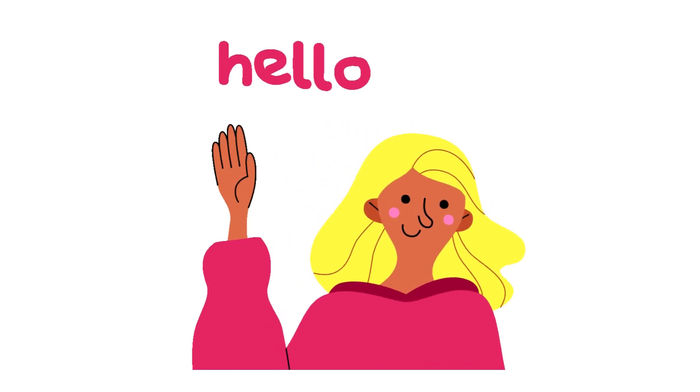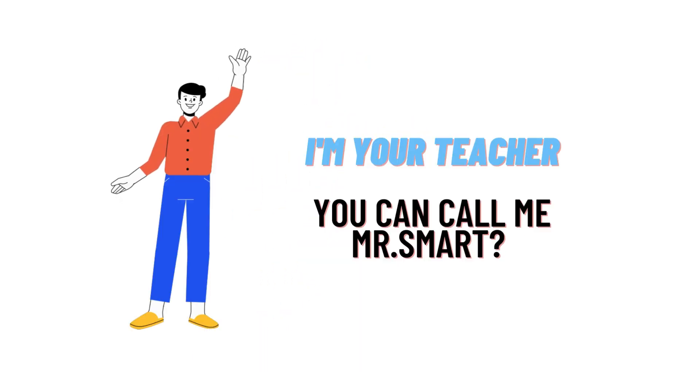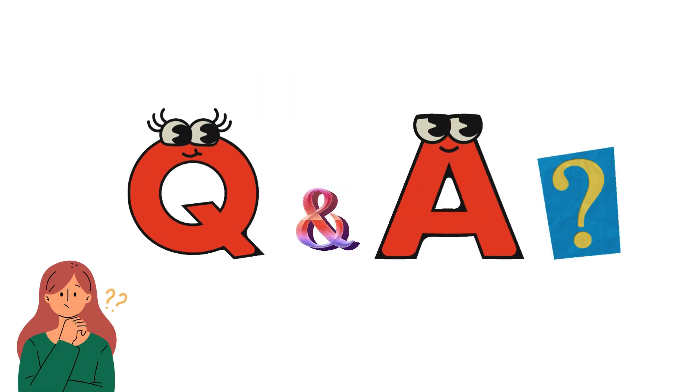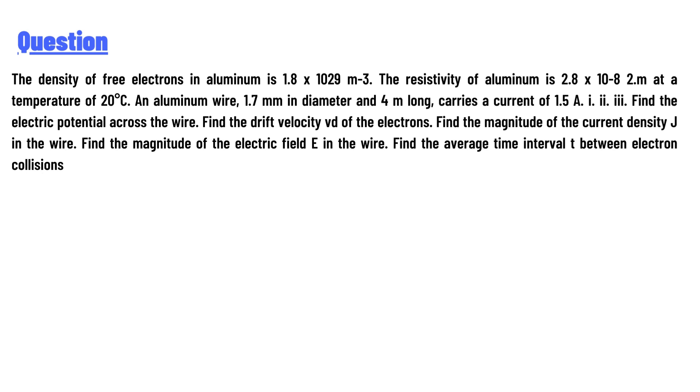Hello everyone, how are you? I am Akrash, your teacher here, and I will teach you different questions and their answers. So I welcome you on classtheater.com. Our today's question is: the density of free electrons in aluminum is 1.8 × 10^29 m^-3.